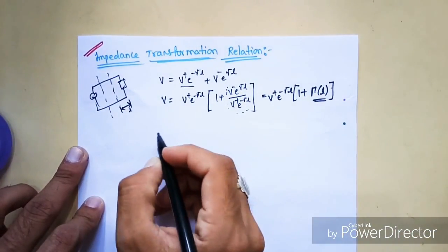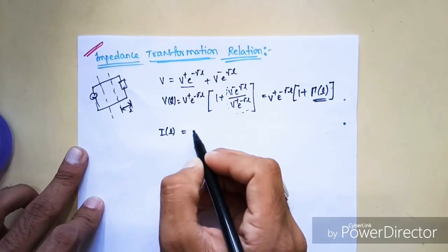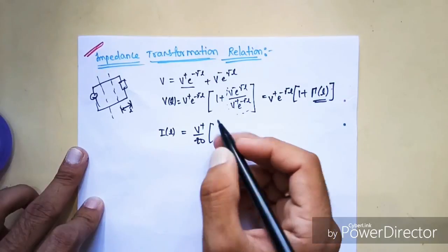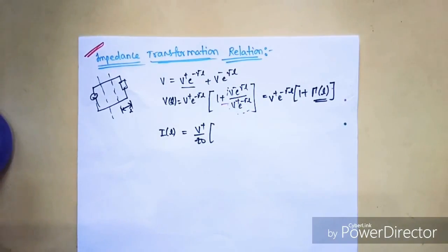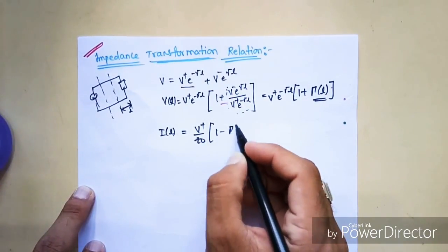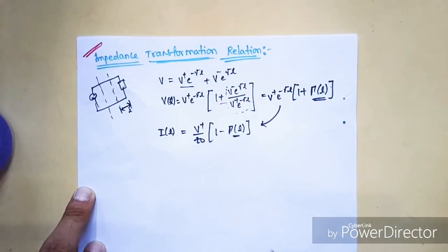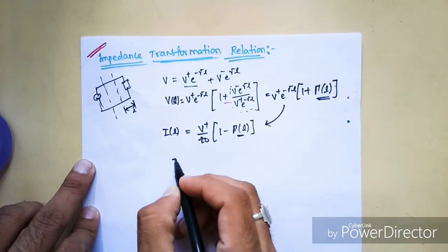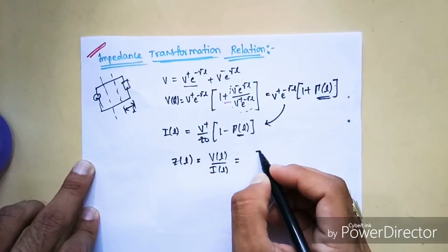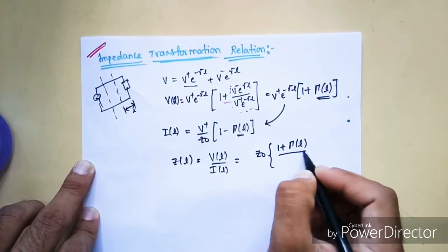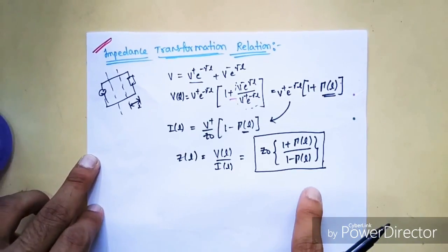Similarly, I can write the voltage and current at any length: I(l) equals v+ / Z0, and by taking common with a minus sign instead of plus, I will get 1 minus ρ(l), where ρ(l) is the reflection coefficient at any length. So I can write directly Z(l) equal to V(l) / I(l), which equals Z0 times (1 + ρ(l)) / (1 - ρ(l)). This is an important intermediate relation.